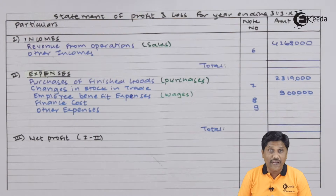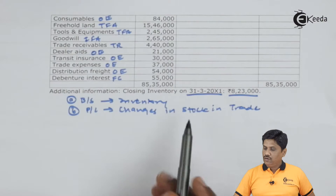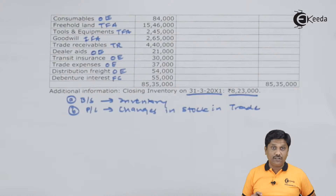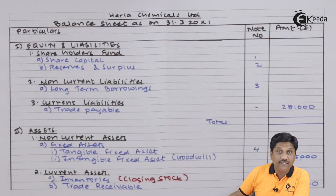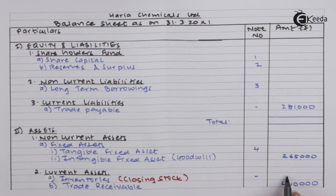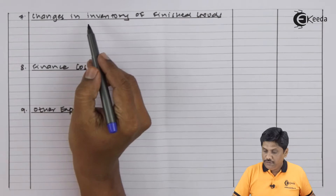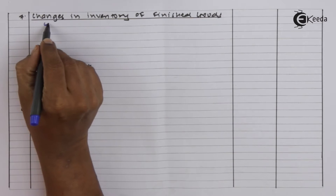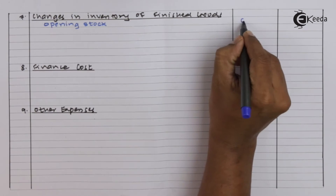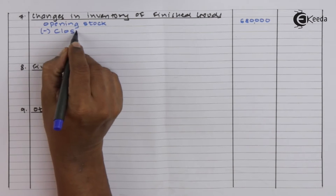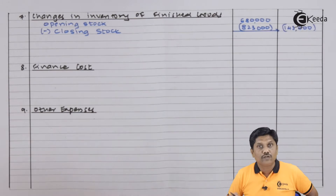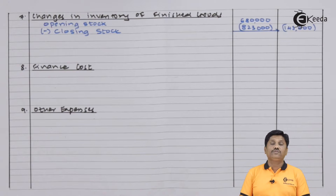Let us begin with the adjustment. The only adjustment given is closing stock. Effect A — balance sheet as inventory: let me write the closing inventory in the balance sheet as a closing stock, because it is a single item. Effect B — changes in inventory or changes in stock in trade: here I need to write opening stock minus closing stock. Our closing stock is from the adjustment and opening stock is from the trial balance.